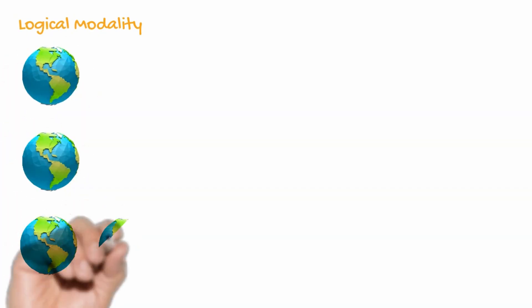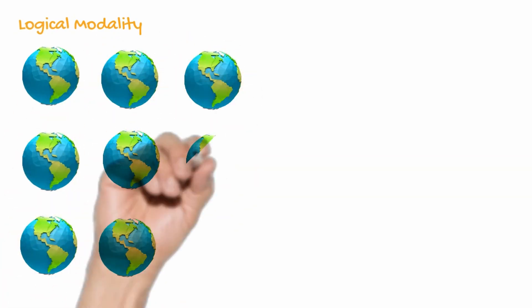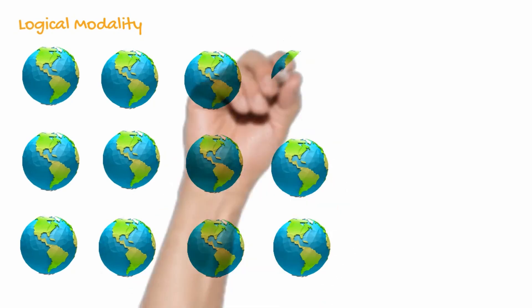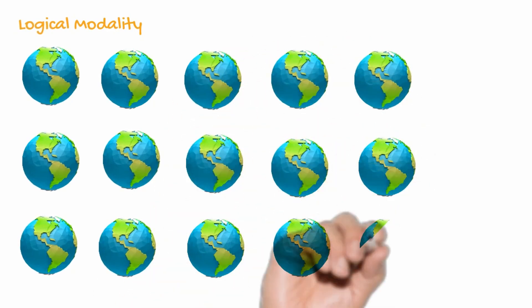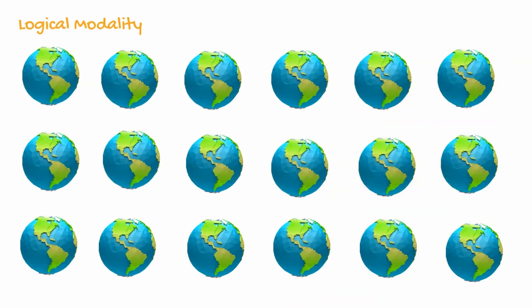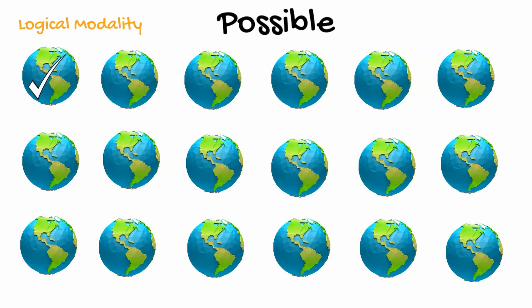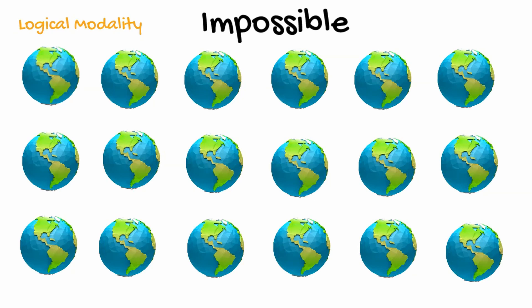Suppose I think about possible worlds having to conform to the rules of logical possibility. When I apply these rules, I can work out if something is possible, impossible, necessary, or contingent by looking at the worlds. Let's think about propositions — a proposition being the content expressed by a sentence which can be true or false. If we look at the possible worlds and see that the proposition is true in at least one of the worlds, then we can say it's possible. But if we can't find any world where it's true, we'll say it's impossible. Remember, when we think about possible worlds, we're surveying all the possible worlds, not just some of them.